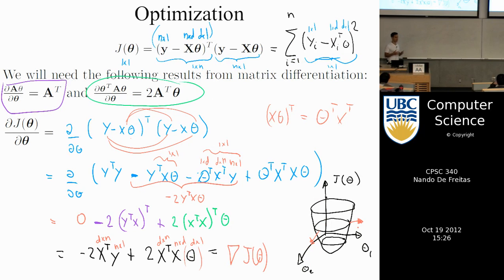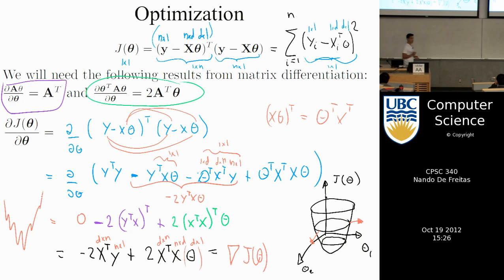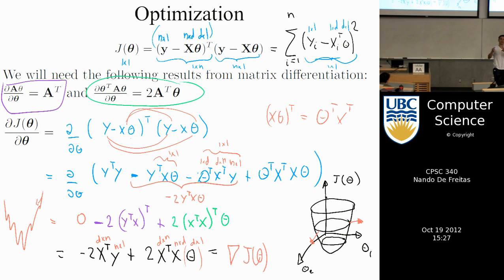We're not using this concept yet, but it will be fundamental when we talk about neural networks. In neural networks we won't have a beautiful landscape, but error functions with complex shapes. To go down, all we do is follow the gradient — or actually the opposite direction, since the gradient points to maximum ascent, so we go in the opposite direction to minimize.